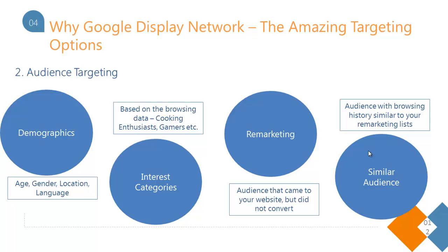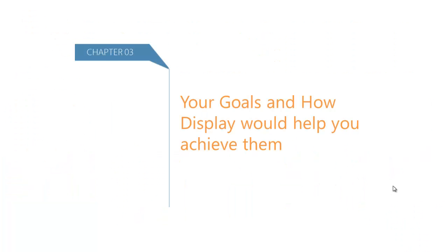The fourth kind of audience targeting is similar audiences. You have your remarketing lists, and you can create lists similar to those. Google makes a list for audiences that have browsing history similar to your remarketing lists. So this list will be very specific to what you have to offer. These were the targeting options, and that is why Google Display Network can be a great place to target audiences very specifically.